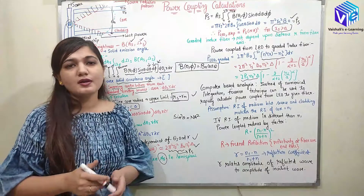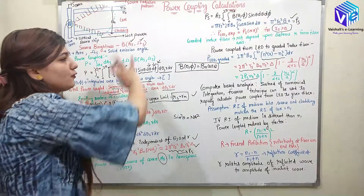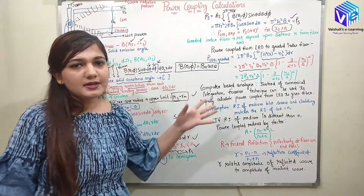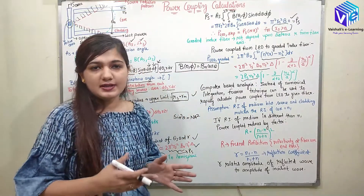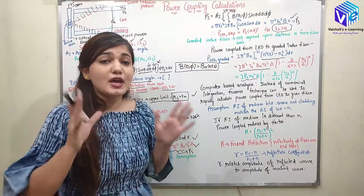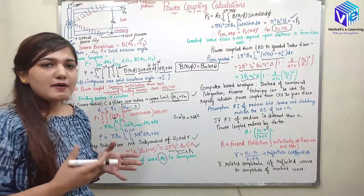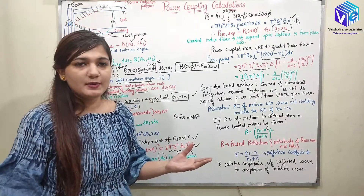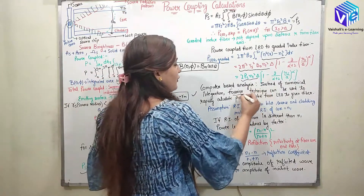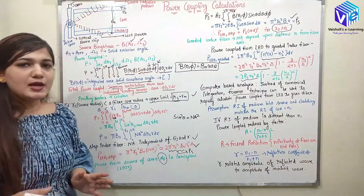These integrations are relatively complex. For LEDs and surface emitting LEDs they can be done analytically, but for edge emitting LEDs the radiated power pattern is more complex, and for lasers it is much more complex. So for those cases we cannot use simple integration methods to calculate the total power coupling. Instead, computer-based methods using Fourier techniques rather than numerical integration can be used to rapidly calculate the power coupled from the source to the given fiber.